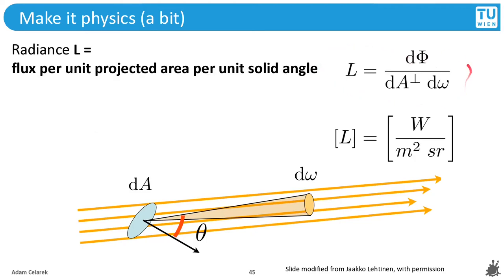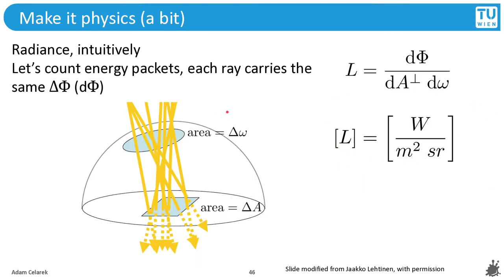Let's look at the formula. We have the differential flux per unit projected area, again differential, and solid angle. This projected area means that we take the angle theta into account, and we have the units which we have seen before. Now using this, we can count energy packets. Each ray carries the differential flux, so it is an infinitesimally small amount of energy. And sorry for the different notation, the picture and formulas were taken from different sources. We have a small solid angle and a small surface patch, so we are counting the rays.